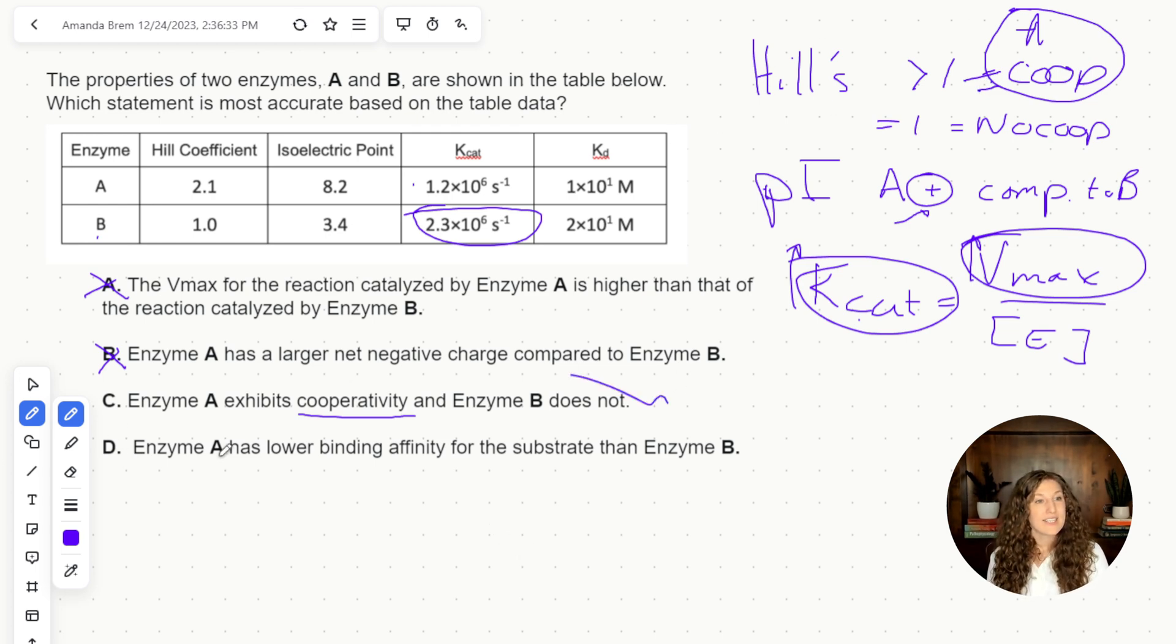And then D says enzyme A has a lower binding affinity for the substrate than enzyme B. That's going to relate to KD. Remember, low KD equals high affinity. So that's from our first problem here. So which one has the lower KD is A. So A has the lower KD or higher affinity, which is opposite what D is saying. So D is out as well.